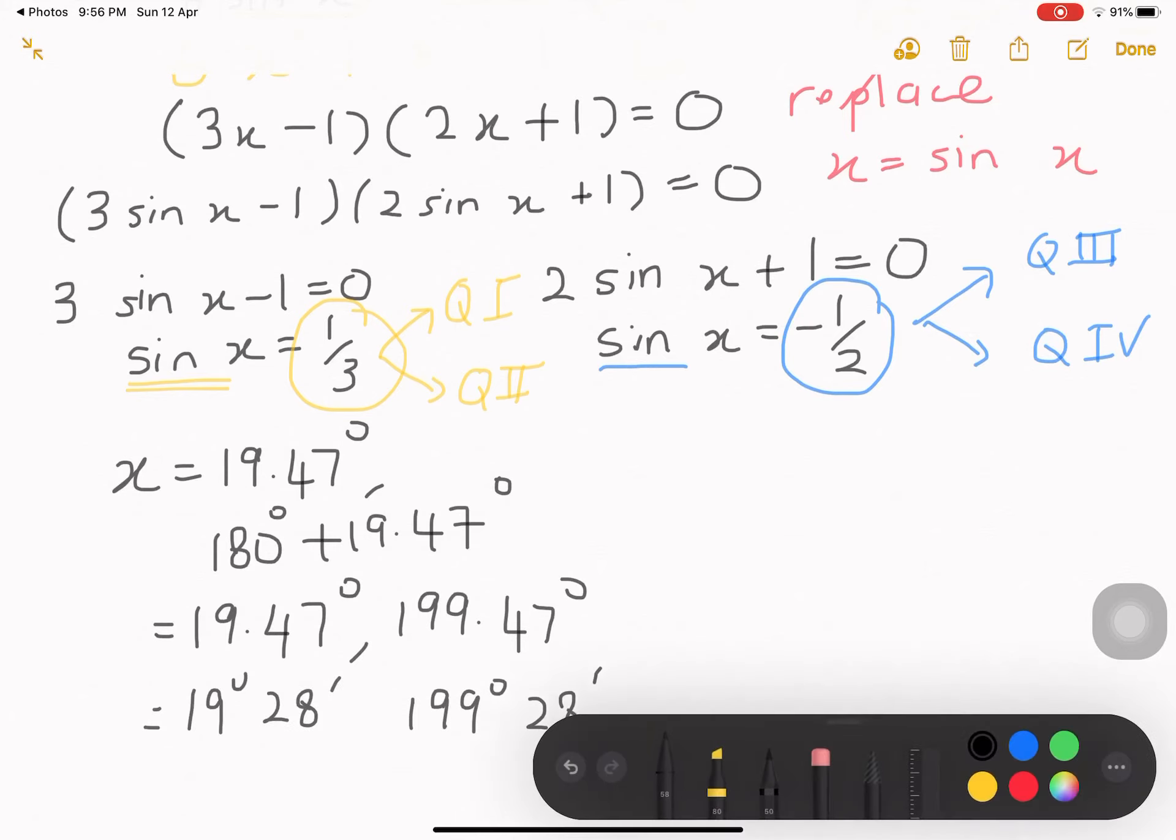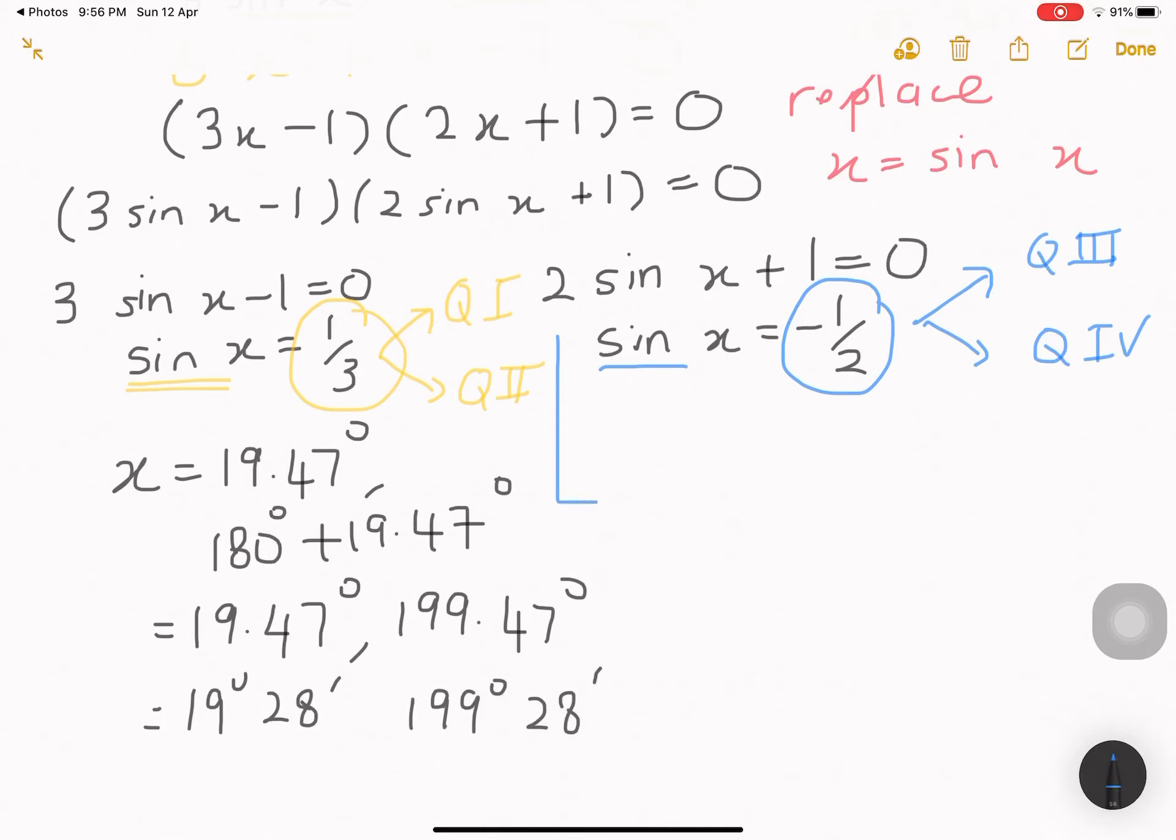I'm going to solve this one. Your x will be here because 1 over 2 is the special angle. Without using calculator, you can get the answer. Sin x is supposed to be the reference angle should be in 30 degree. But, because our value is in quadrant 3 and quadrant 4, our x should be 180 degree plus 30 degree. And, another one is 360 degree minus 30 degree. You'll get 210 degree and another one is 330 degree.